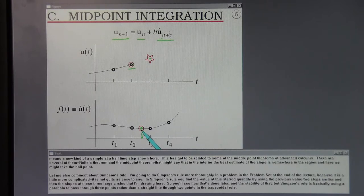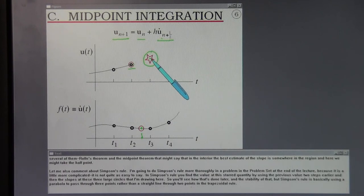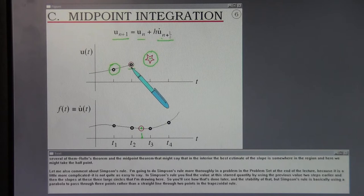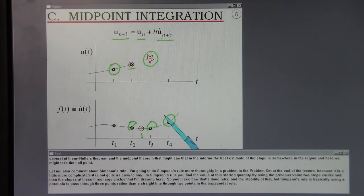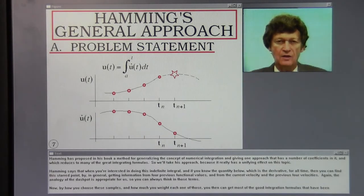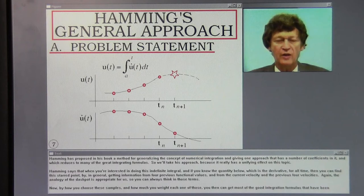Let me also comment about Simpson's rule. I'm going to do Simpson's rule more thoroughly in a problem, in the problem set at the end of the lecture, because it is a little more complicated. In Simpson's rule you find the value at this starred quantity by using the previous value two steps earlier and then the slopes at these three large circles I'm drawing here. But Simpson's rule is basically using a parabola to pass through three points rather than a straight line through two points in the trapezoidal rule.